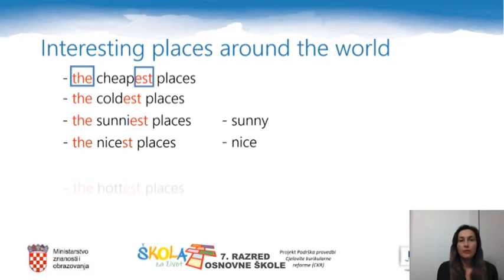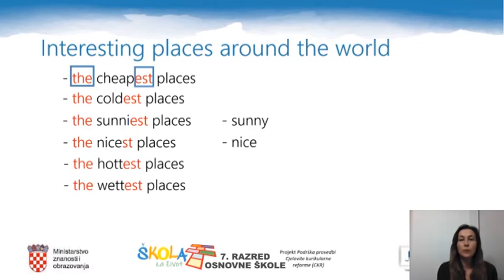Some of the places can be the hottest places or the wettest places. So if an adjective is short and if there is a vowel — a, e, i, o, or u — in the middle, we should double the last letter, like 'the hottest places' and 'the wettest places'.